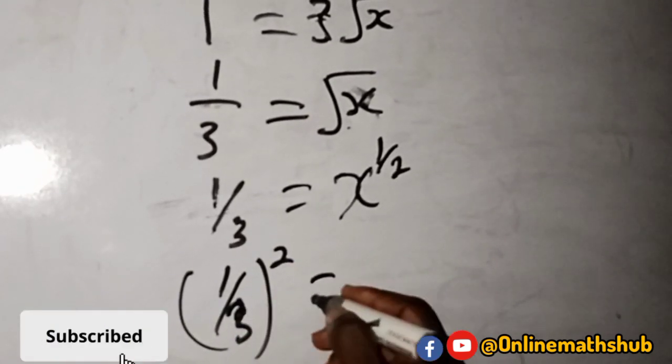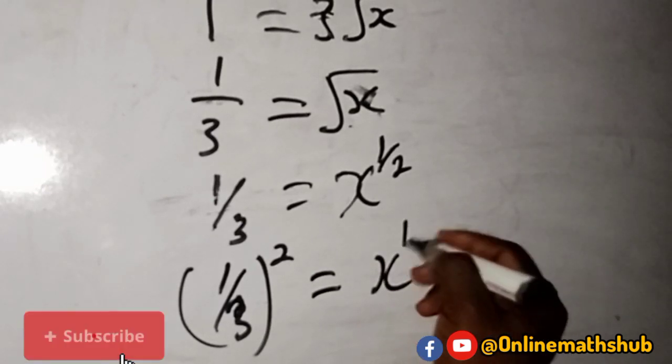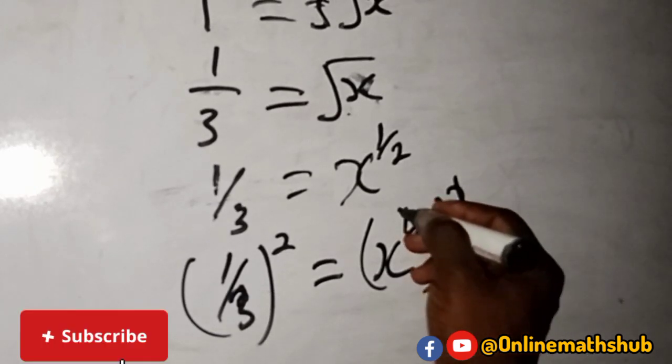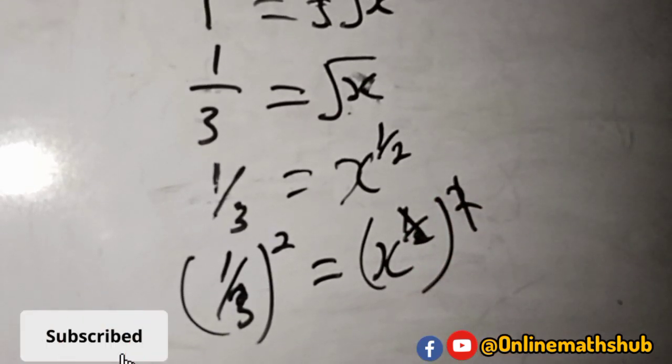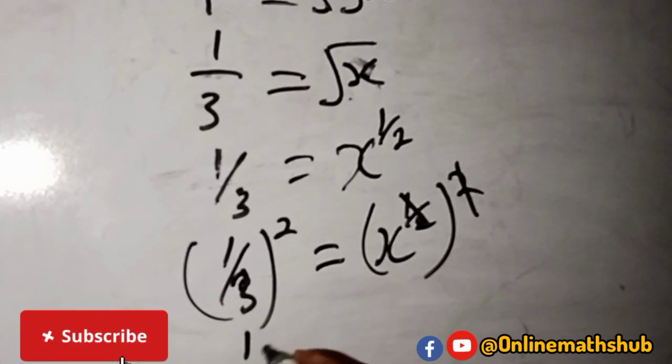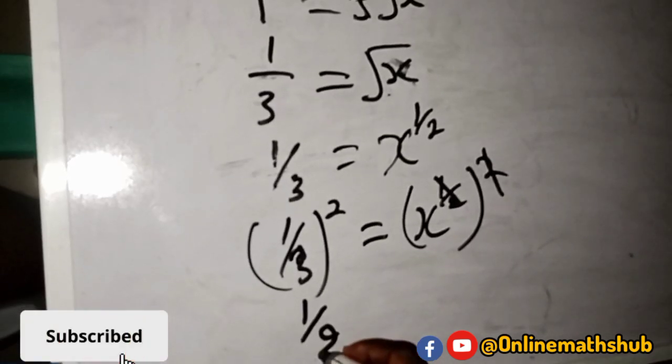and it is equal to x raised to power 1 over 2, which I will also square. This 2 will cancel this half, and then I am left with 1 over 9